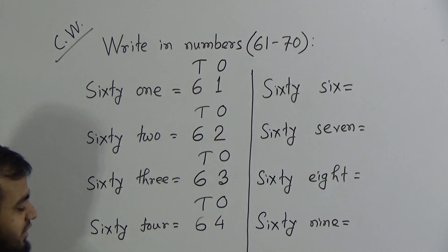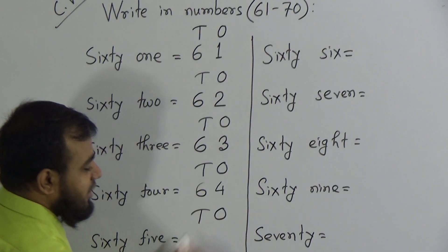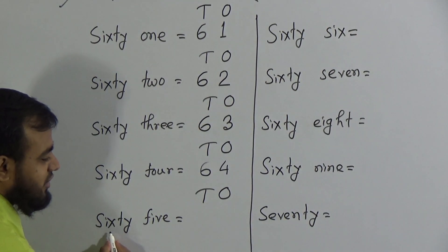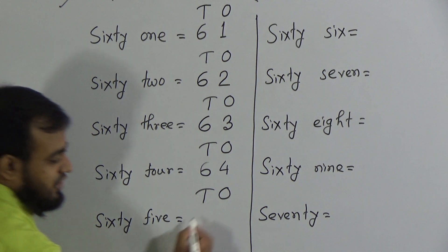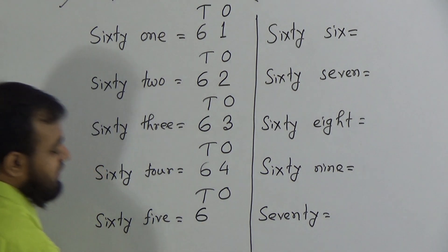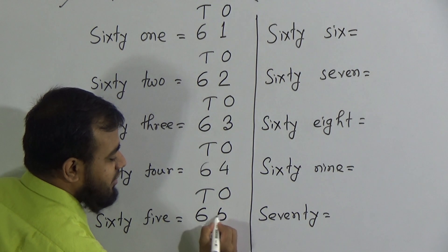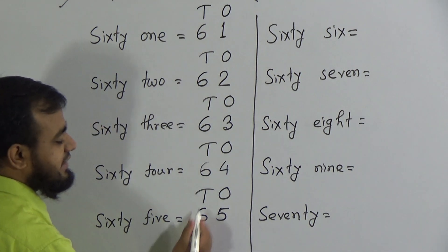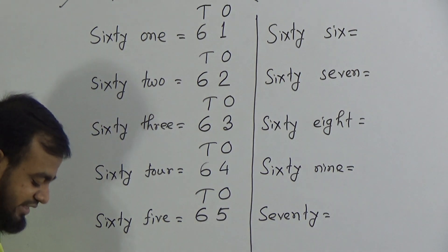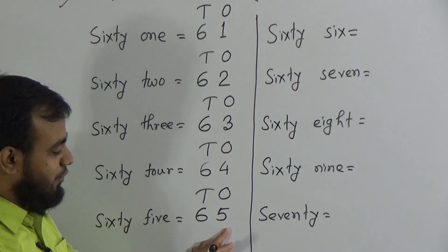Next number is 65. First indicate the place value, tens and ones. To write down 60, we write 6 in the tens place. To write down 5, we write 5 in the ones place. We say: six tens and five ones makes the number 65, or you can say directly six and five makes the number 65.